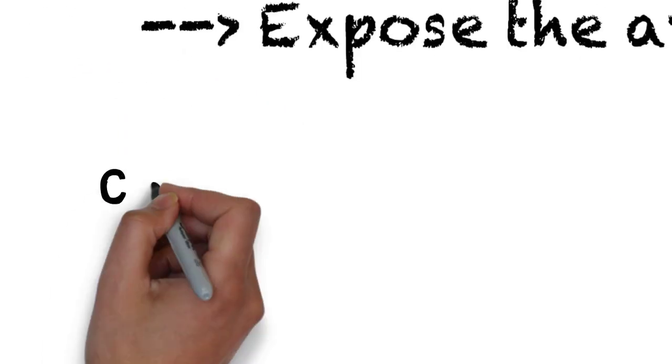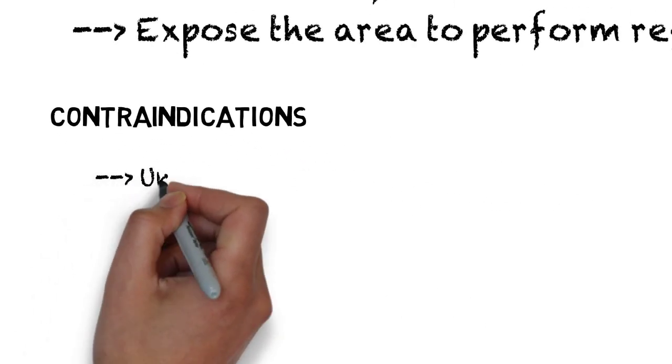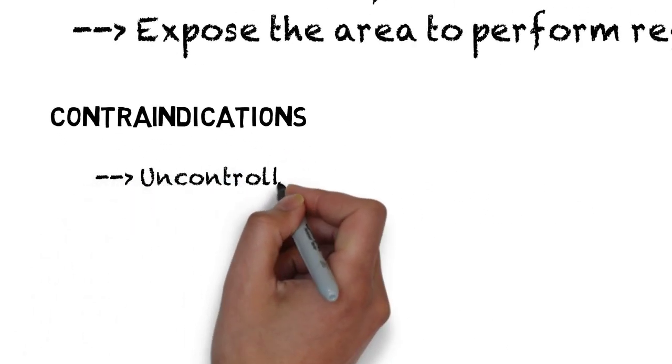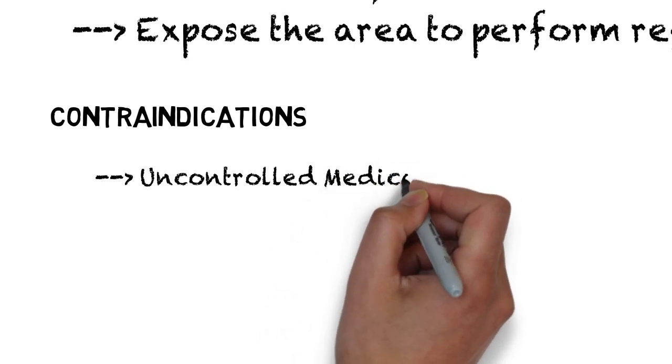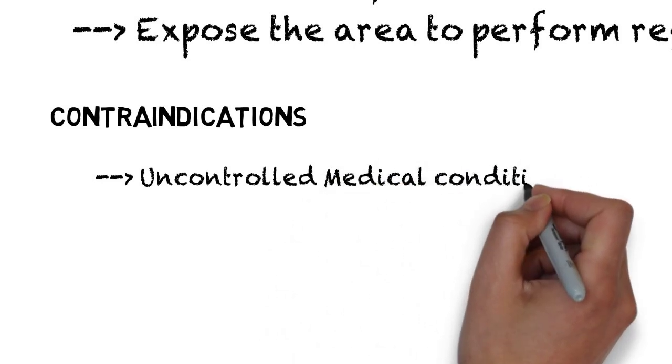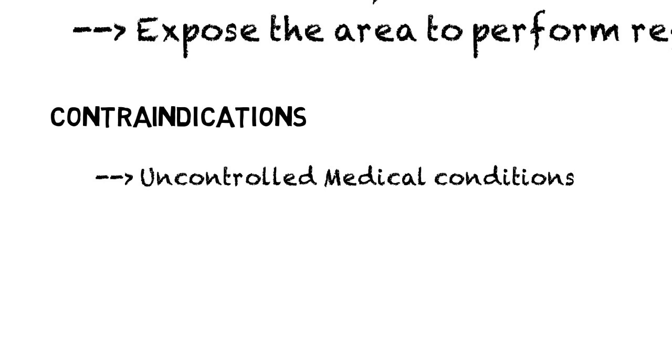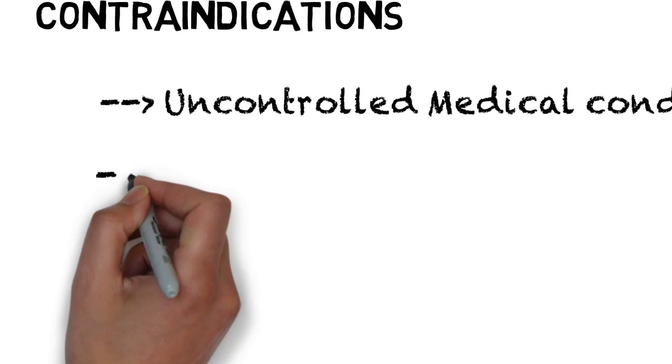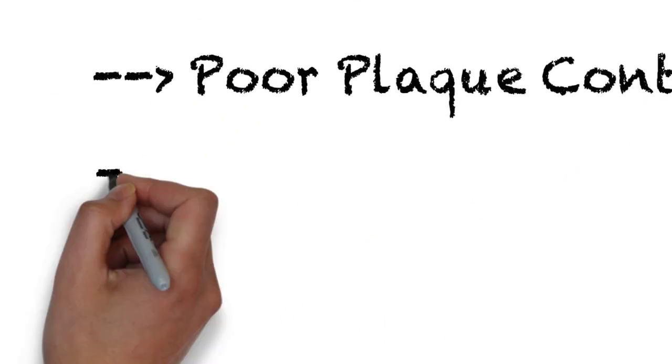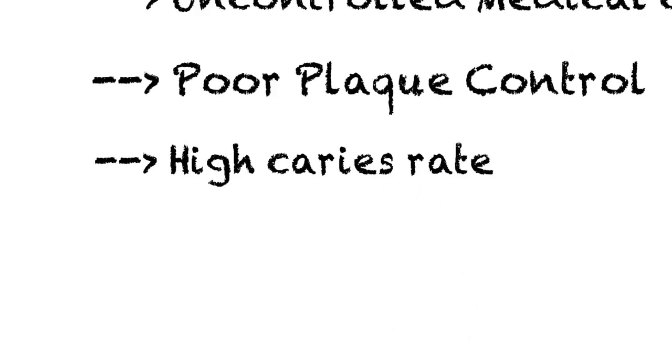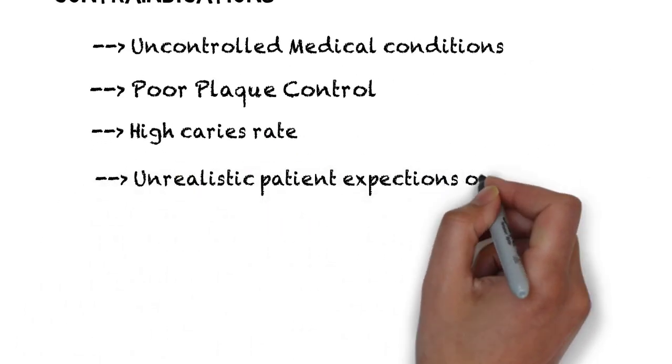Next is contraindications. Periodontal flap surgeries are contraindicated in patients with uncontrolled medical conditions such as uncontrolled diabetes, uncontrolled hypertension, history of myocardial infarction less than six months, etc.; in patients with poor plaque control with high caries risk; and in patients with unrealistic expectations or desires.